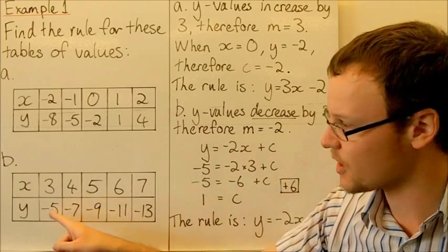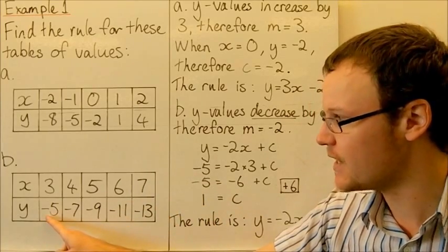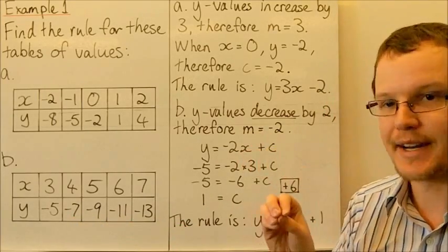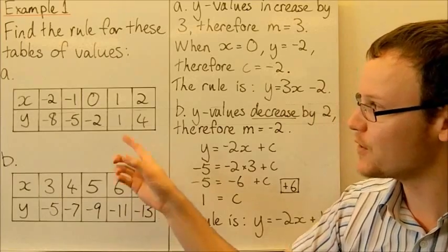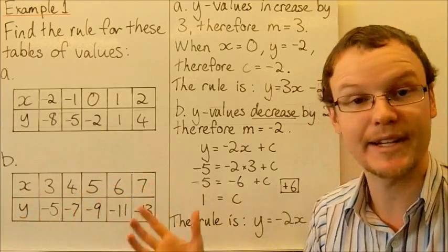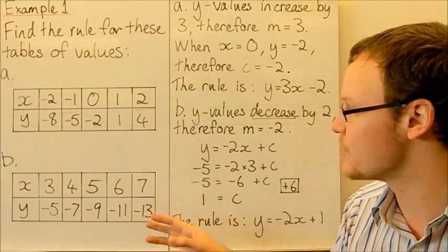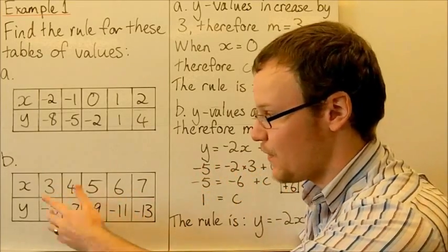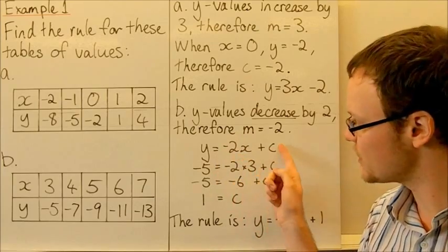For problem B, the y values decrease by 2 as x increases by 1 — going negative 5, negative 7, minus 2, minus 2 — so m is equal to negative 2. You might notice we have a problem: we don't have a value for when x equals 0. We can get around that by substituting any of our points into the equation, for example the point (3, negative 5).